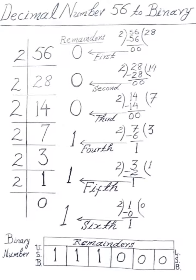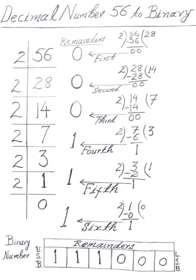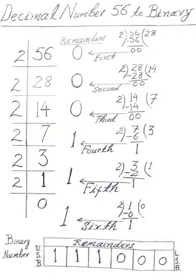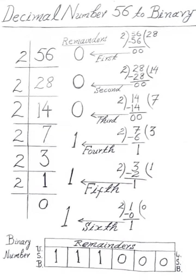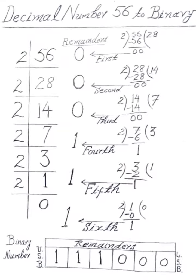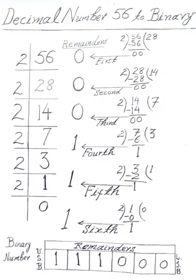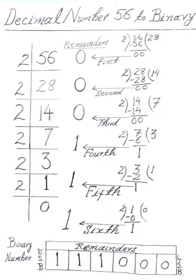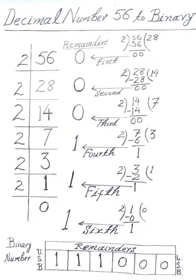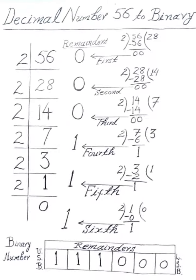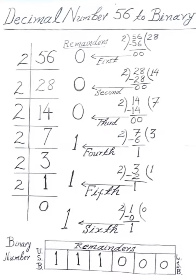We will perform the conversion of decimal number 56 to binary. First, we divide 56 by 2 and the remainder 0 is the first remainder. Then we divide 28 by 2.